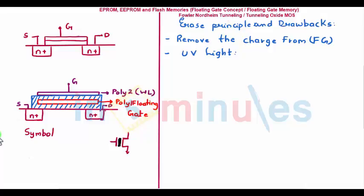The erase principle of EPROM is based on ultraviolet light. To erase the memory cells, you have to take the chip and expose it to ultraviolet light through a glass window present at the top of the chip. The UV light increases the conductivity of the silicon dioxide surrounding the floating gate, which allows all the charge trapped on the floating gate to be released.